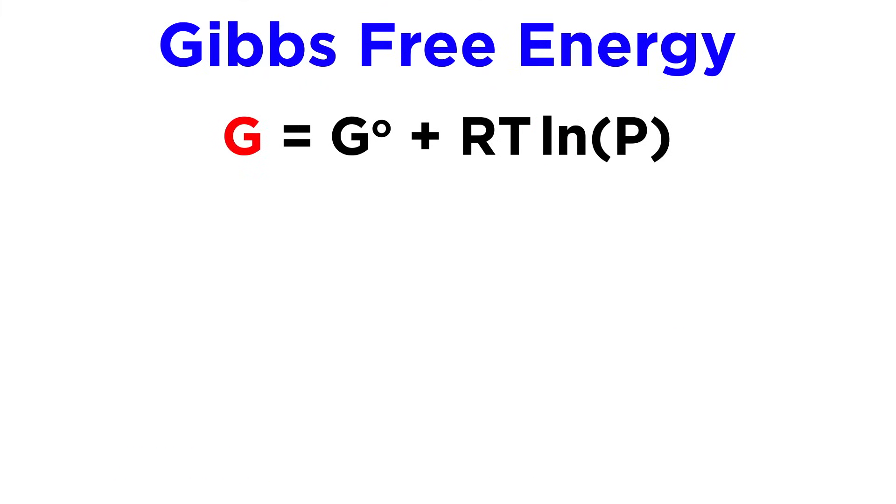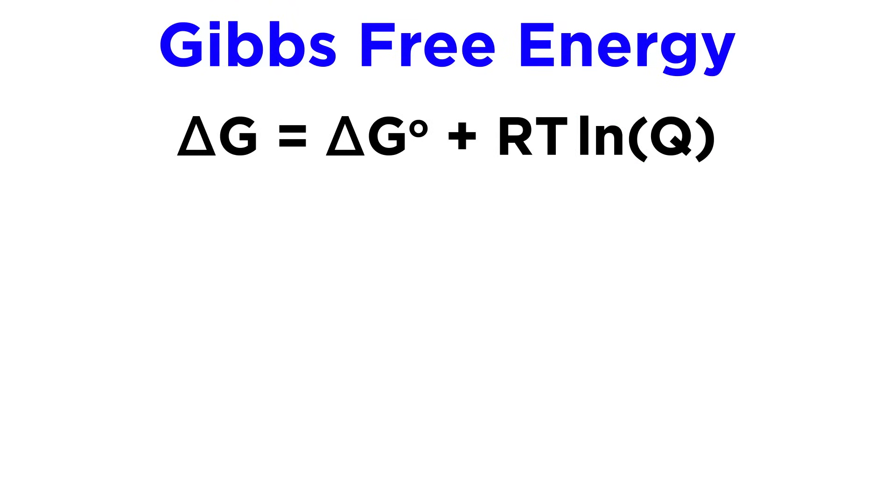It will be the case that the free energy of the system is equal to its standard free energy, which implies standard conditions and thus one atmosphere of pressure, plus RT times the natural log of the actual pressure. But from this a more applicable equation can be derived, and that is delta G equals the standard change in free energy plus RT times the natural log of Q, the reaction quotient.